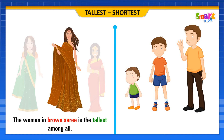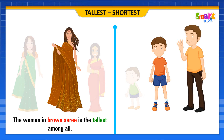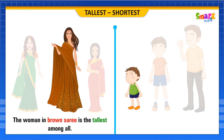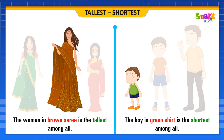Now, look at these people. The boy in red shirt is shorter than the man in orange shirt. The boy in green shirt is shorter than the boy in red shirt. Thus, the boy in green shirt is the shortest among all.